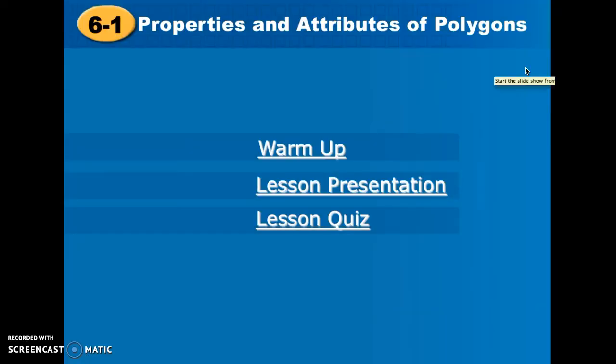Hi ladies and gentlemen, this is Ms. Skokin and we're here in chapter 6 to talk about polygons and quadrilaterals. What that means is we have moved beyond the triangle with three sides and three angles and we're going to start looking at larger polygons with more sides and more angles.